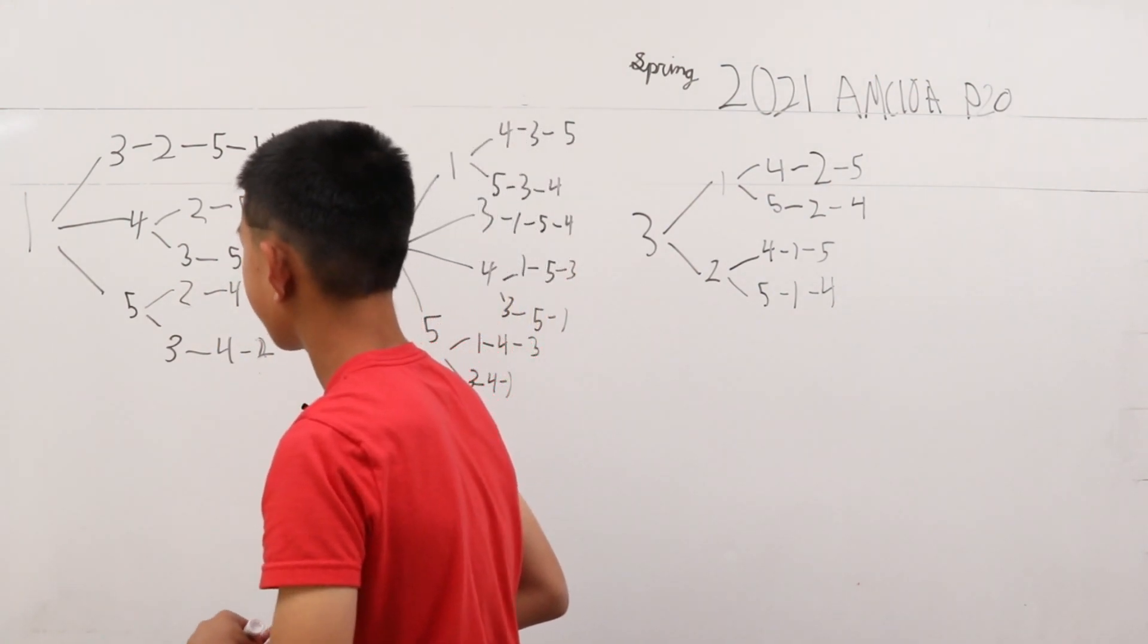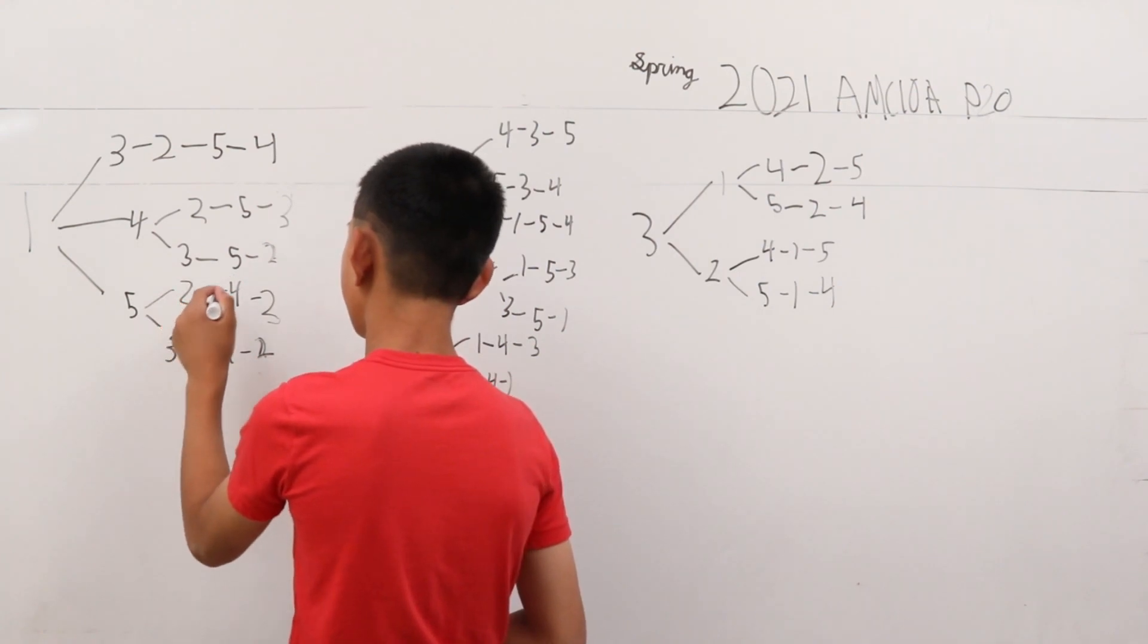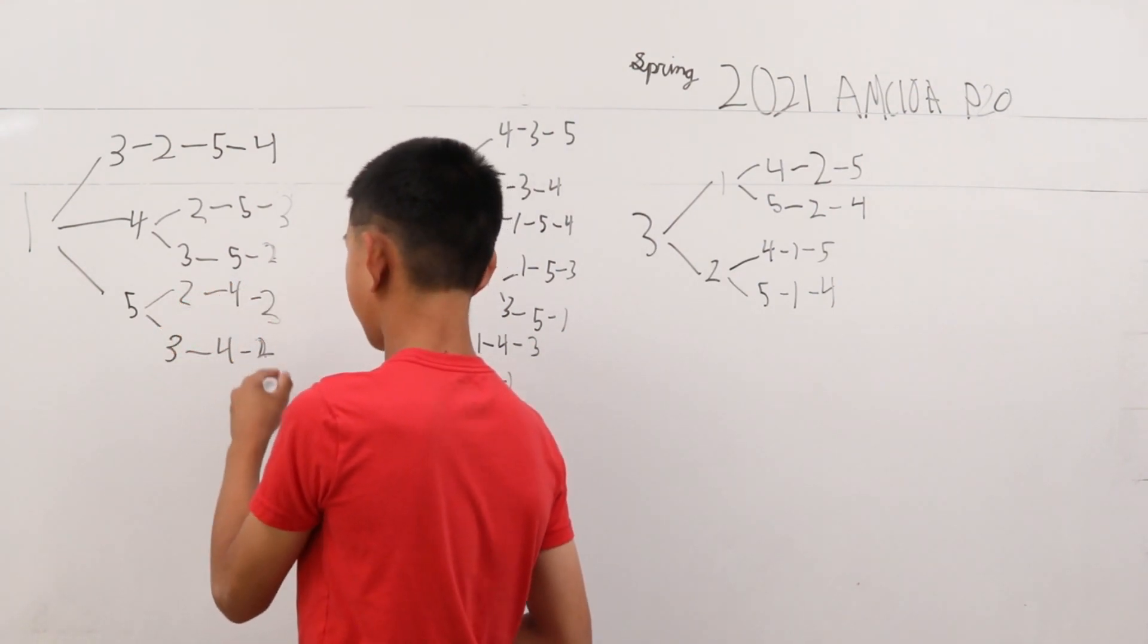Let's take a look at another double thing. 1, 5, this one is 2, 4, 3 and this one is 3, 4, 2.